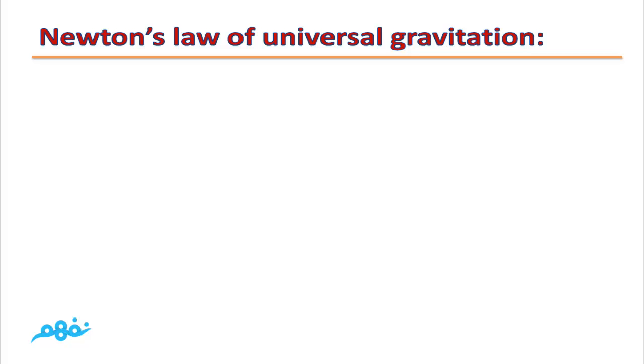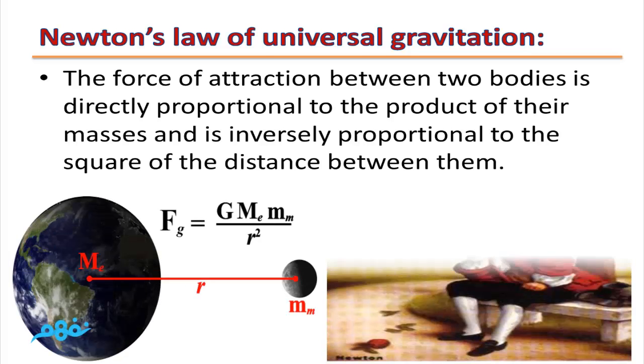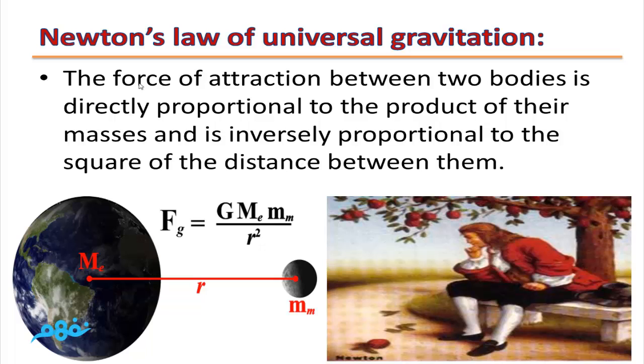Newton's Law of Universal Gravitation: The force of attraction between two bodies is directly proportional to the product of their masses and is inversely proportional to the square of the distance between them.